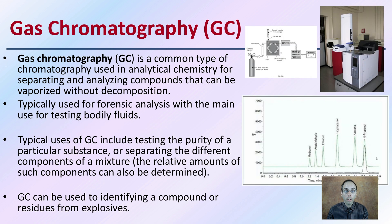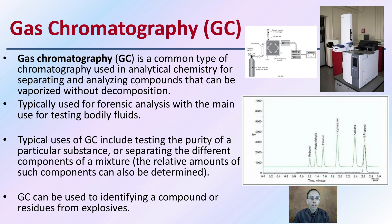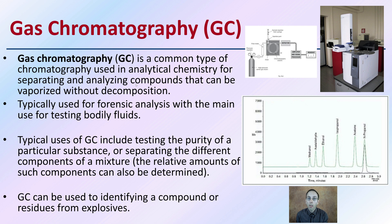One example of a confirmatory test is gas chromatography, or GC, which is very commonly used in laboratory settings. Gas chromatography is used to analyze and separate compounds that can be vaporized without decomposition. In forensic analysis, it's mainly used for testing bodily fluids. Uses of GC include testing the purity of a substance or separating out different components of a mixture to determine relative amounts. Gas chromatography can also be used to identify compounds or residues from explosives, making it a very versatile and commonly used method.